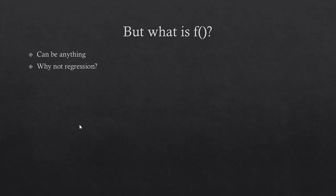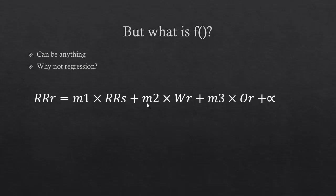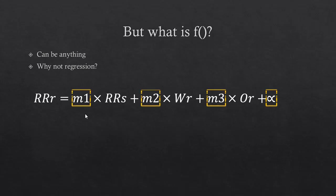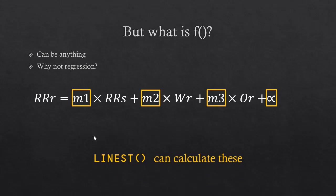We start with something simple called regression — specifically multiple linear regression. The equation takes the form: RRR = m1 × run_rate_scored + m2 × wickets_remaining + m3 × overs_remaining + alpha. This is like y = m1·x1 + m2·x2 + m3·x3 + c from school. If we can calculate those m1, m2, m3, and alpha values that satisfy our training data, that's what we need. Fortunately, Excel has the LINEST function — linear estimation — which takes inputs and fits them to an output, calculating the best-fitting m1, m2, m3, and alpha values.